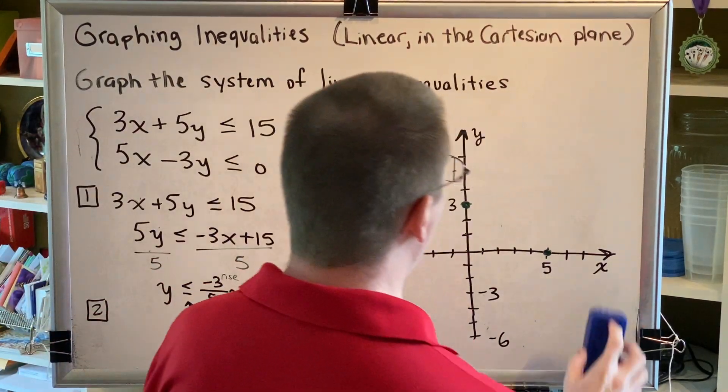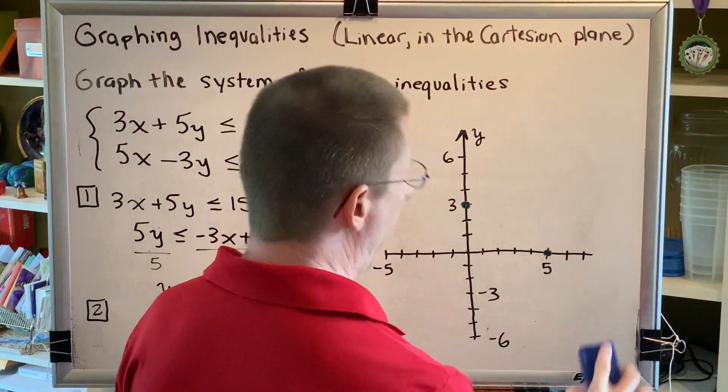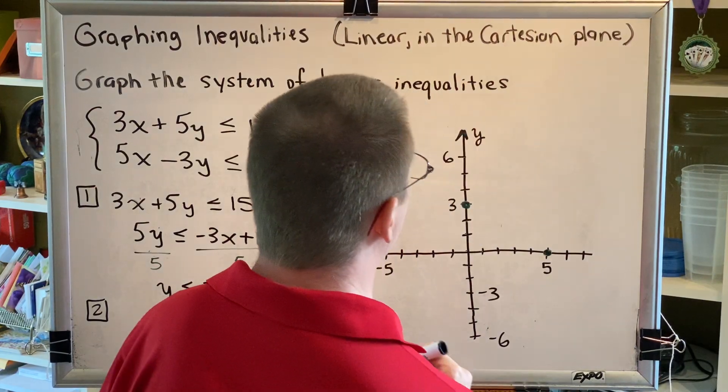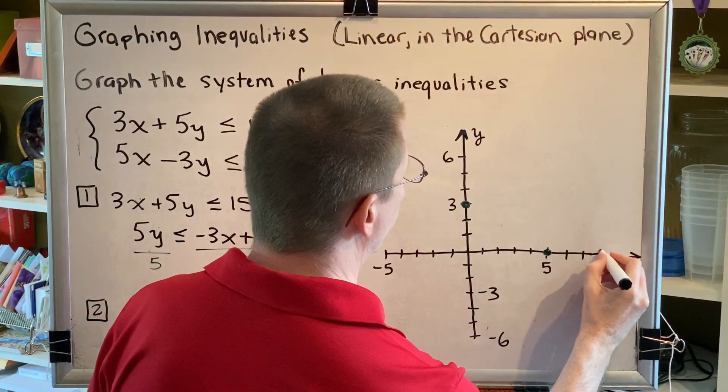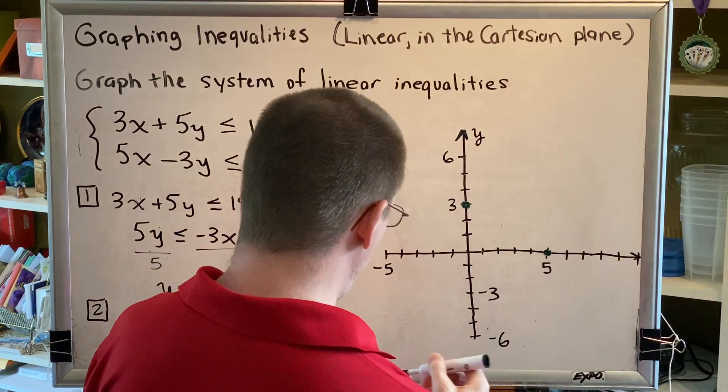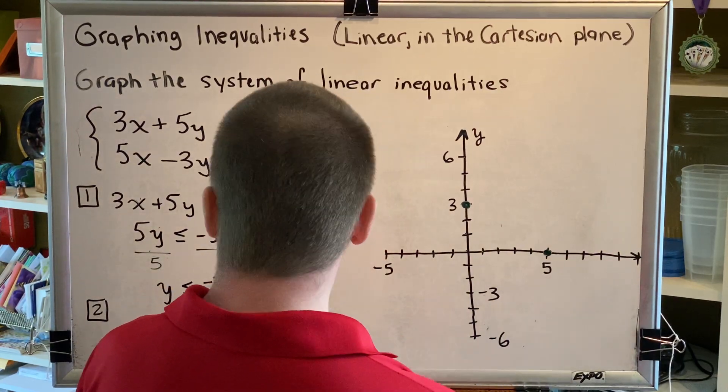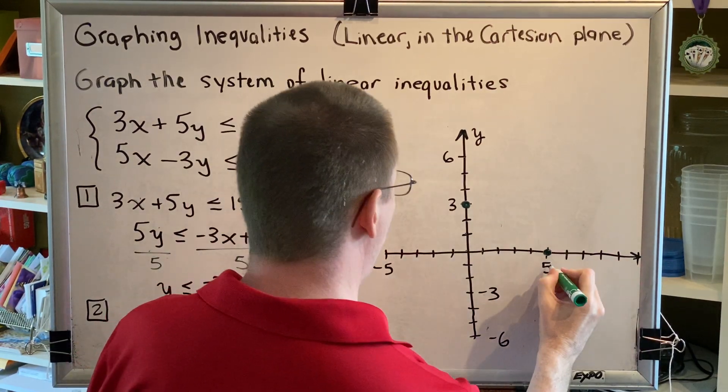If I extend the scale of my graph a little bit, I might be able to get it all the way out to 10 so that I can do this one more time. I want to go down 3 and 5 to the right.